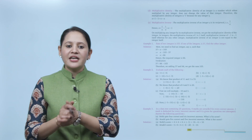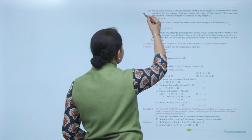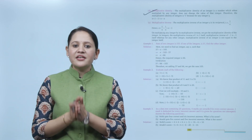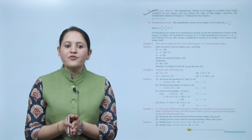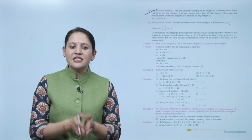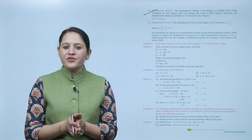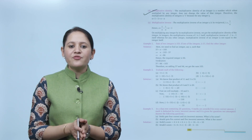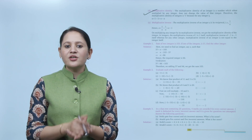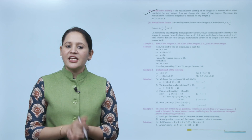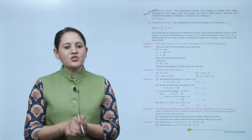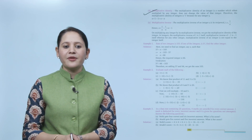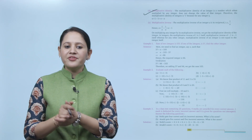Next, multiplicative identity. The multiplicative identity of integers is the number which, when multiplied by an integer, does not change its value. Therefore the multiplicative identity for integers is 1, because for any integer a: a multiplied by 1 equals 1 multiplied by a equals a.